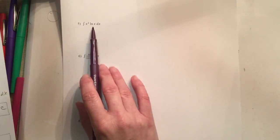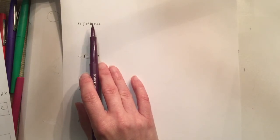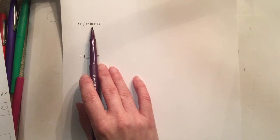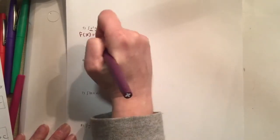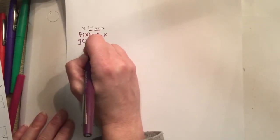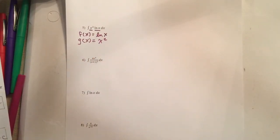Another thing I mentioned at the start: if you have a natural log, that has to be f(x). The reason is we only have a derivative for the natural log of x - the derivative of ln(x) is 1 over x. We don't have an antiderivative of ln(x). So if you set it as g(x), you'd need to find its antiderivative, and we can't do that. Anytime you have a natural log of x, 100% of the time your first move should be to say natural log of x has to be f(x). That makes g(x) equal to x squared - that's the one exception to the usual rule.